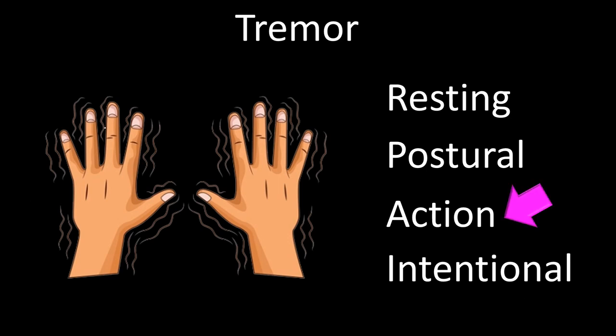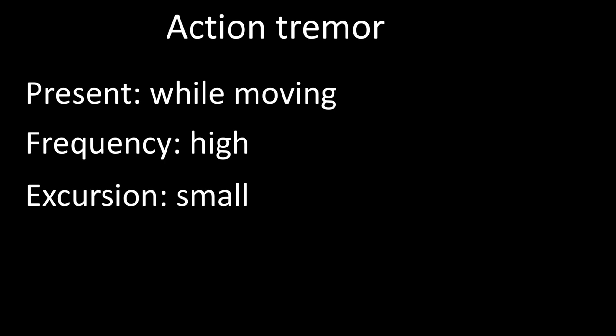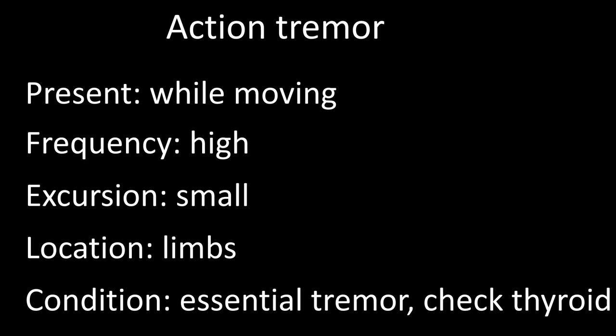Action tremor is worsened by or only present during movement. It is high-frequency with small excursion of the body part involved, most often in the limbs. This tremor usually occurs in conjunction with postural tremor in essential tremor. Both postural and action components of essential tremor are worsened by anxiety and improved by alcohol — not recommended — and beta-blockers. Action tremor may also occur in association with hyperthyroidism.